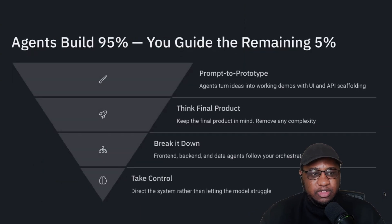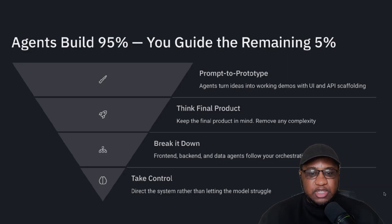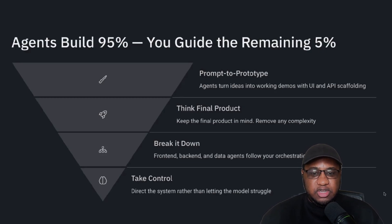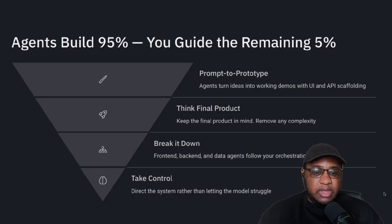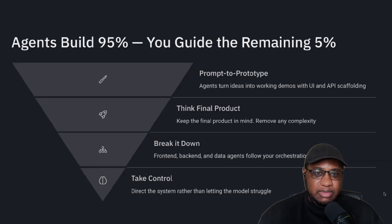The ratio is: agents are going to build about 95% of these apps, and your job is to guide that remaining 5%. You start with the prompt-to-prototype phase — turning what the agent does into different UIs, little working demos, exploring the idea quickly, building a lot of throwaways. Then you think about the final product and how you want to polish it up. It's a micro app, so it should be simple enough to build and simple enough to polish, but you still want a little mini plan before you go into it.